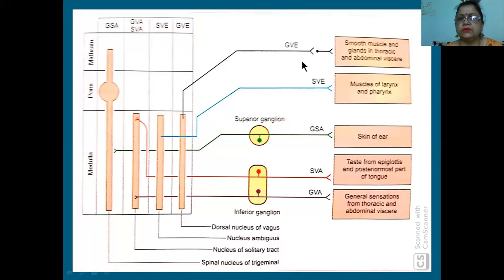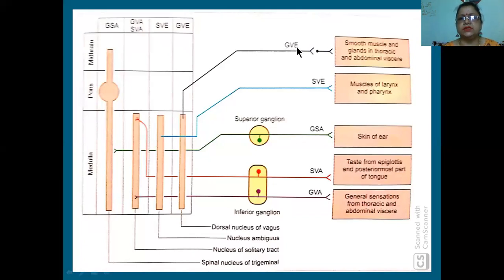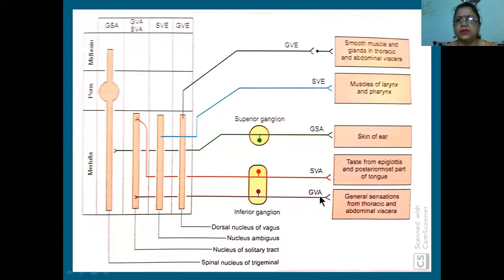All these nuclei will give separate special fibers. A nerve will have a motor root and a sensory root. In vagus, what we can see: GVE means general visceral efferent, special visceral efferent, general somatic efferent, special visceral afferent, and general visceral afferent.